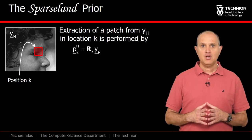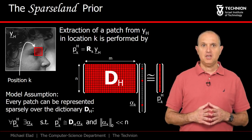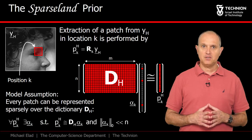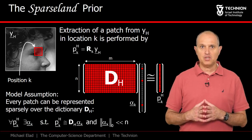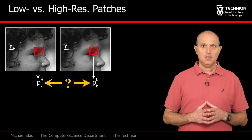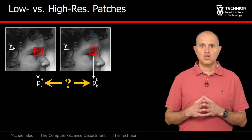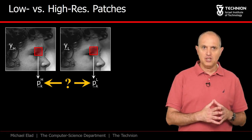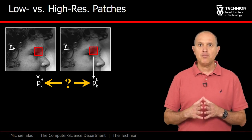pKh is the kth patch from the high resolution image, and it is believed to have a sparse representation alpha k with respect to the dictionary dH. Now let's try to describe the connection between these two corresponding patches, pKh, and its low resolution version, pKl.